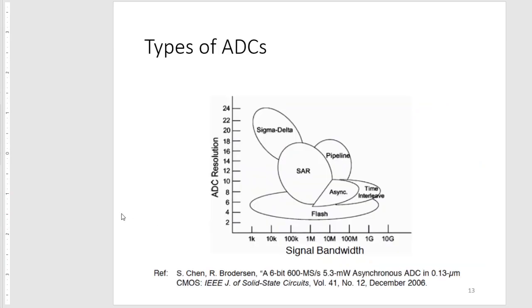Next, we will be talking about the types of ADCs and how they are usually categorized. Usually for ADCs, we compare the ADC resolution with the signal bandwidth, which is synonymous with speed. In this region, we have fast ADCs but very low resolution, like flash, asynchronous, and time-interval ADCs.